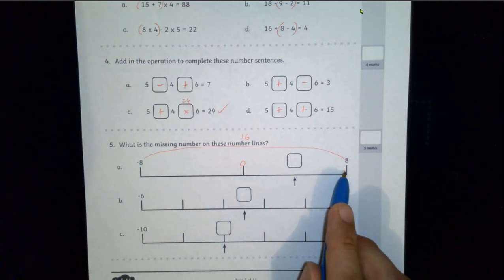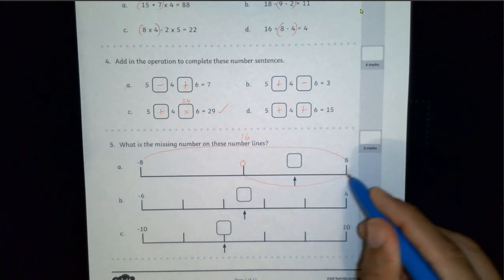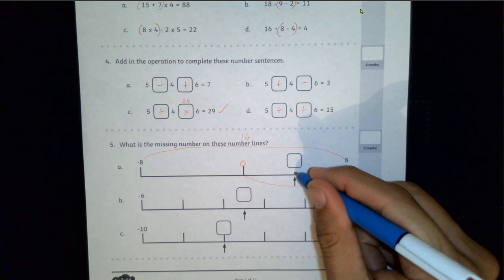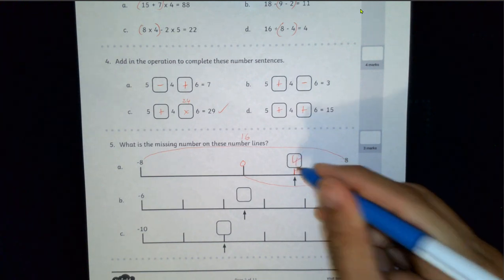Now in the middle of 0 and 8, so that's like a span of 8. And half of 8 is 4, so that's what this number in the middle must be. 4.